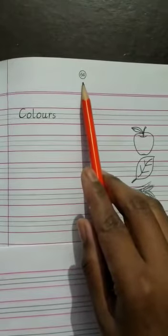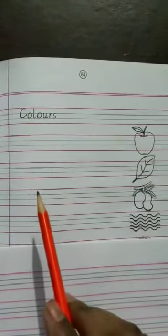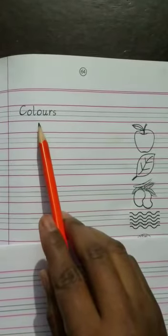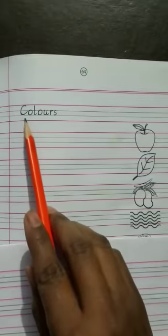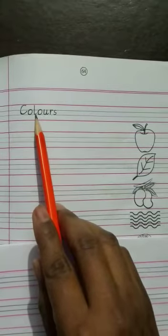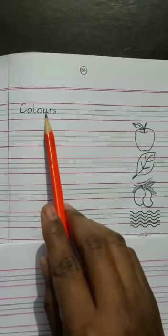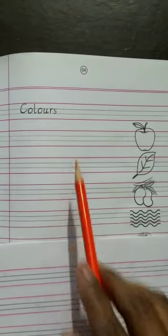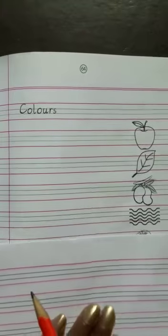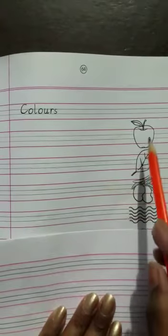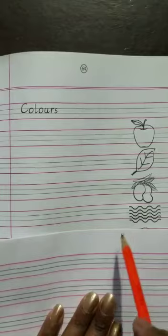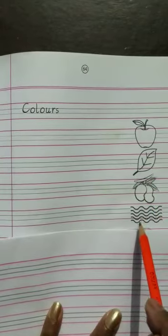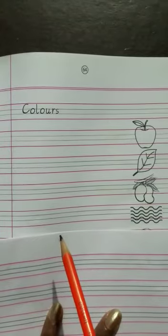And on this page the heading is Colors: C-O-L-O-U-R-S, colors. Children, on this page we can see some pictures. First of all we will color these pictures and then we will write the names of the colors.